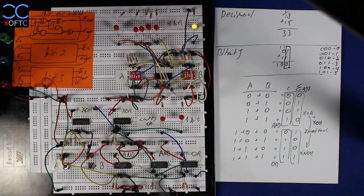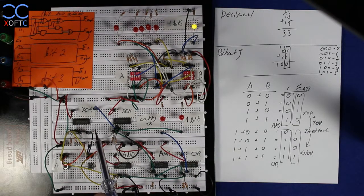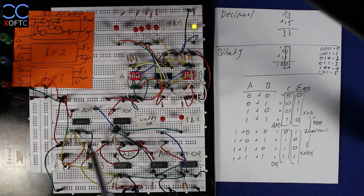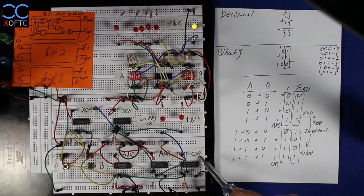First, let's look at this full adder here. It's made entirely from logic gates. You can see we have two exclusive OR gates, two AND gates, and another OR gate here.